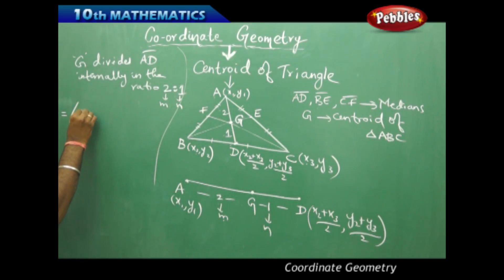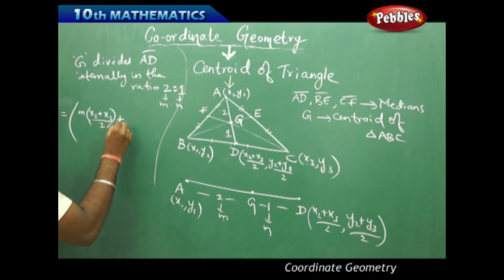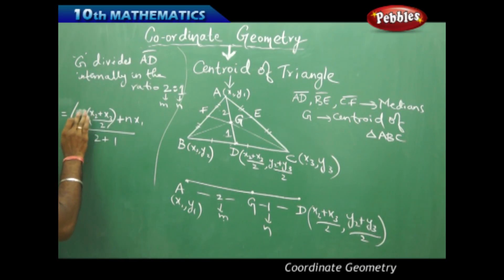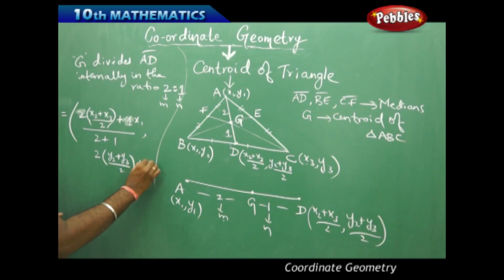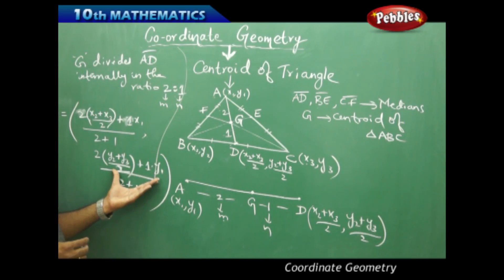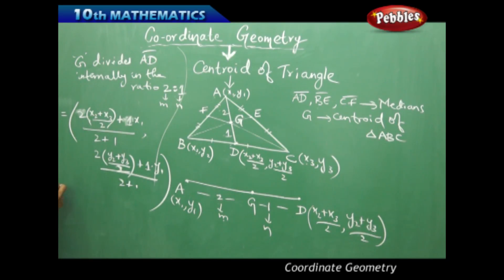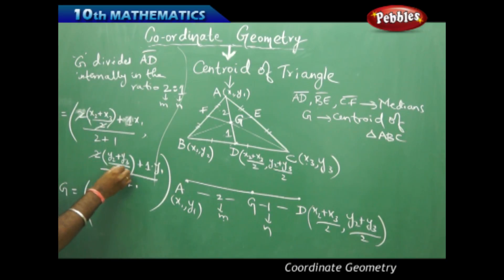Substituting into the section formula (Mx2 + Nx1)/(M+N) for the x-coordinate: 2 times (x2+x3)/2 plus 1 times x1, divided by 2+1. Similarly for the y-coordinate: 2 times (y2+y3)/2 plus 1 times y1, divided by 2+1. Simplifying further using LCM, the 2s cancel out.